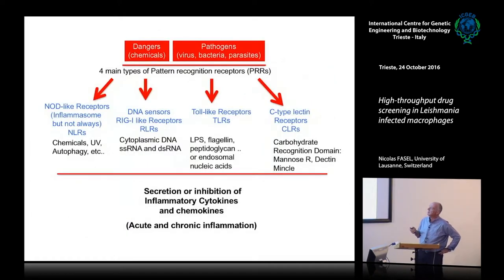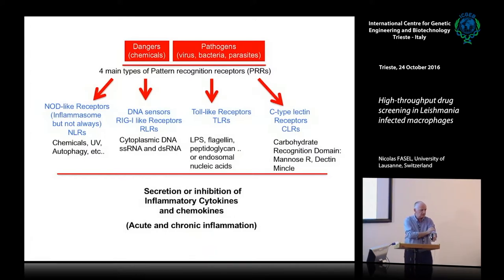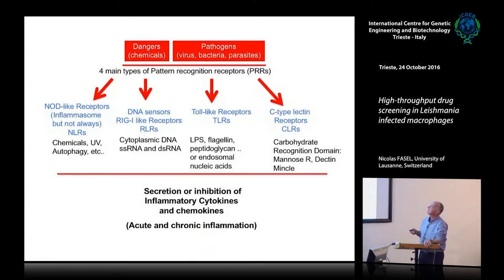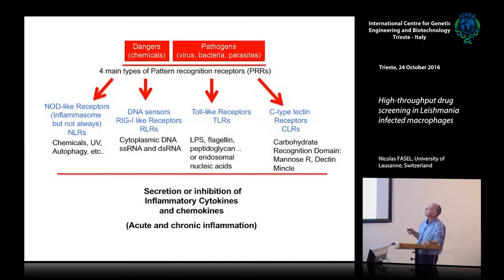In the innate immunity, you have different types of signals — the signals can be dangerous signals, or they can be pathogens, chemicals, viruses, bacteria, and parasites. They can act through four main types of pattern recognition receptors, PRR.